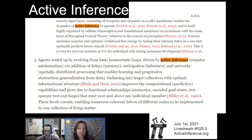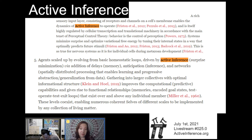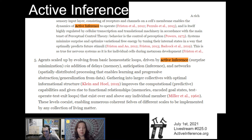Active inference, as brought up in this paper: agents scaled up by evolving from basic homeostatic loops driven by active inference surprise-minimization via addition of delays — which are memory and anticipation — which is inference, and networks of spatially distributed processing that enables learning and progressive abstraction or generalization from the data. Gathering into larger collectives with optimal information structure also improves computational, i.e. predictive capabilities, and gives rise to functional relationships such as memories and coded goal states, test-operate-test-exit loops that exist over and above any individual member. These levels coexist, enabling numerous coherent selves of different scales to be implemented by any collection of living matter.